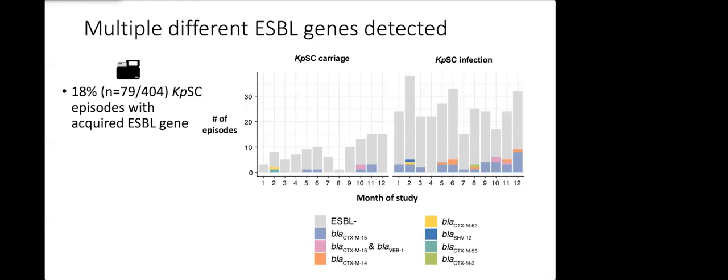Here is a bar chart showing you the total number of episodes per month of the study broken down by whether the isolate was a carriage isolate or an infection isolate. When we screened the Illumina data for ESBL genes we found that 18% of our genomes had an acquired ESBL gene and by far the most common ESBL gene was CTX-M-15.